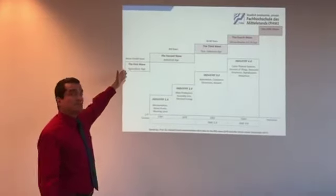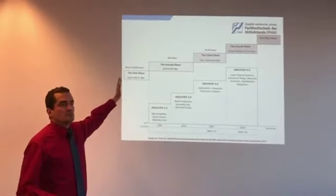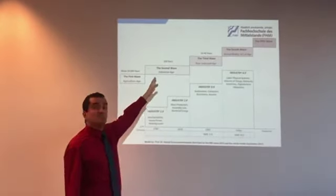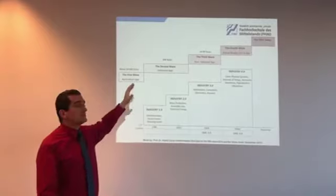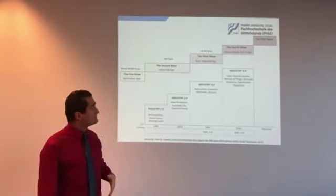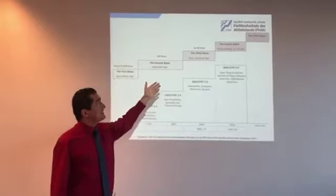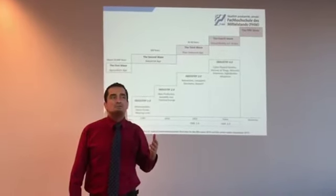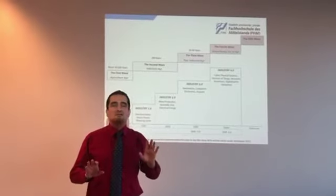The first wave was the agriculture age, something like 50 to 70 thousand years. The second wave was industrial age, like 300 years after the 17th century. And the third wave was post-industrial age, since 1970 to something like 2000 or 2006.